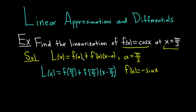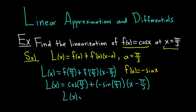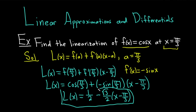So the tangent line is a linear approximation to the function. L of x equals the cosine of pi over 3, plus negative sine of pi over 3 times x minus pi over 3. The cosine of pi over 3 is 1/2, and the sine of pi over 3 is the square root of 3 over 2. So L of x equals 1/2 minus (√3/2)(x minus pi over 3). This is the linearization of f of x at x equals pi over 3.